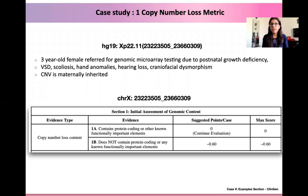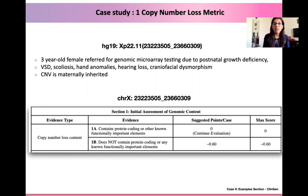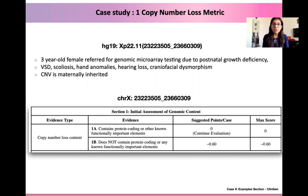The initial step when we have a CNV in hand is to assess it for its genomic content, given by sections 1A and 1B. There are five sections in the clinical guidelines and we will begin with section 1, which is to look for protein coding genes or other important known functional elements within the CNV.